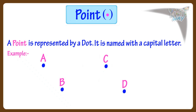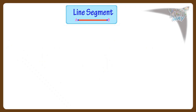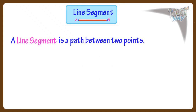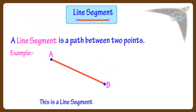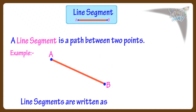Now, let's see what is a line segment. A line segment is a path between two points. For example, this is line segment AB or BA. Line segments are represented like this — that is, a bar above the line name.